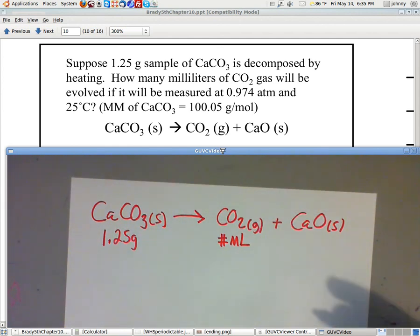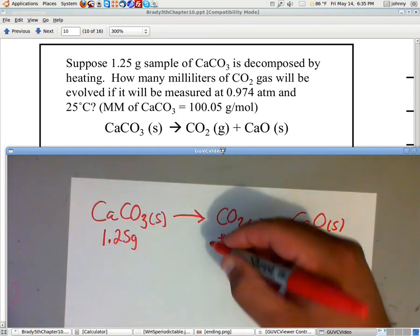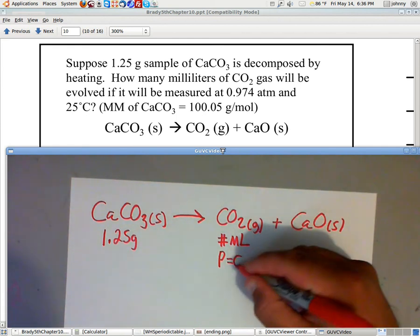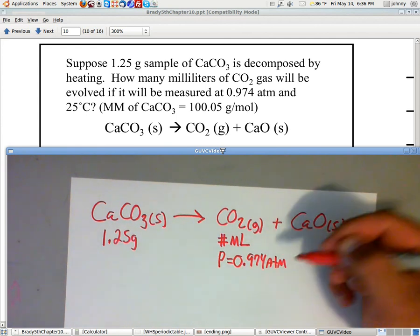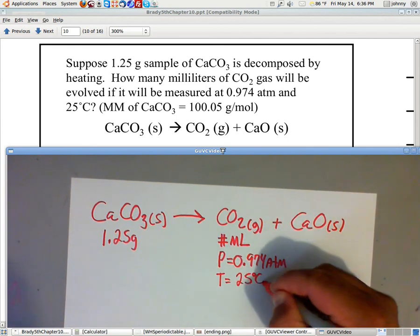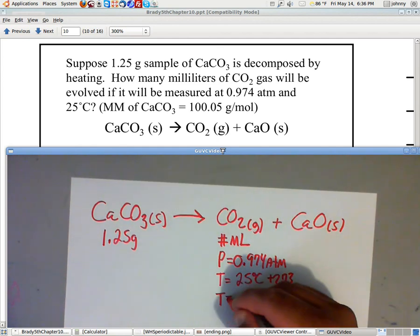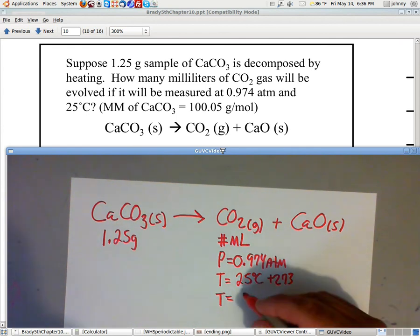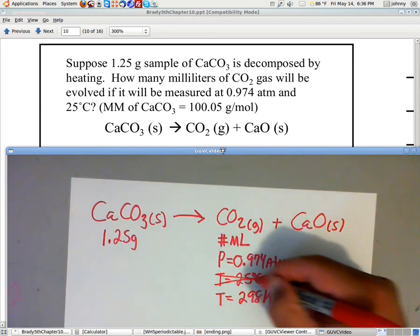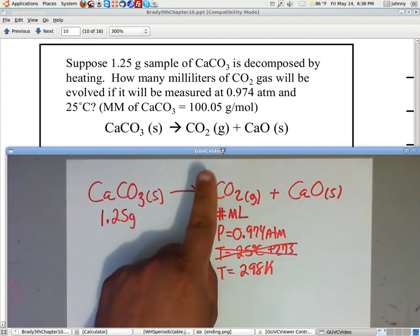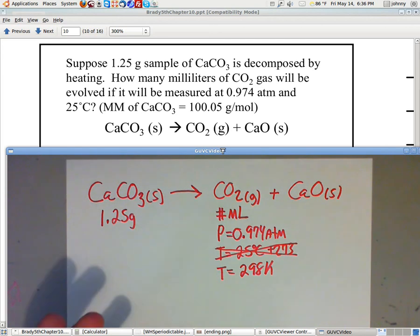And it says will be evolved if it will be measured at, so they give me a pressure, and the pressure that they give me is 0.974 ATMs. And they give me a temperature of 25 degrees Celsius. Now you know I'm going to have to add 273 to that, and that means that my real temperature value that I'm going to use will be in Kelvins, this is going to be 298 Kelvin, so we're not going to use this, only use Kelvins. Now, I need milliliters, what I want to do is I'm going to set up a dimensional analysis to get to moles of this using this information. So that's my first step, then I'm going to try to use the ideal gas law.